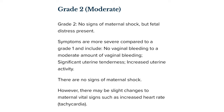Class 2 placental abruption occurs in about a quarter of cases, with up to moderate vaginal bleeding or concealed bleeding. Findings include maternal tachycardia, orthostatic changes in blood pressure and heart rate, moderate uterine tenderness, and important blood work changes including hypofibrinogenemia — fibrinogen levels must be checked.